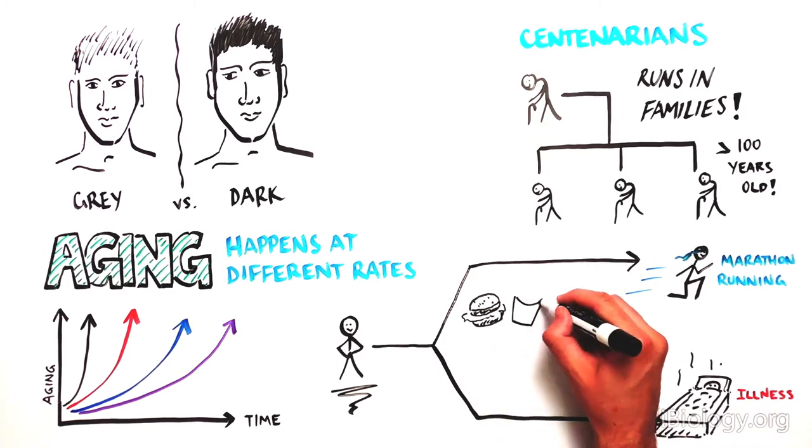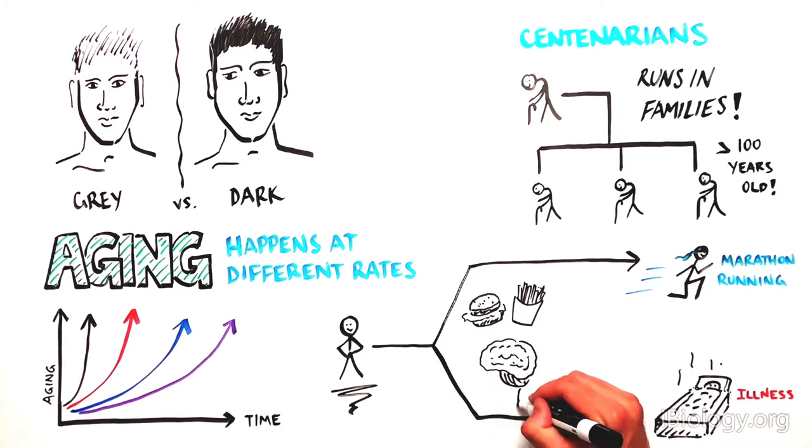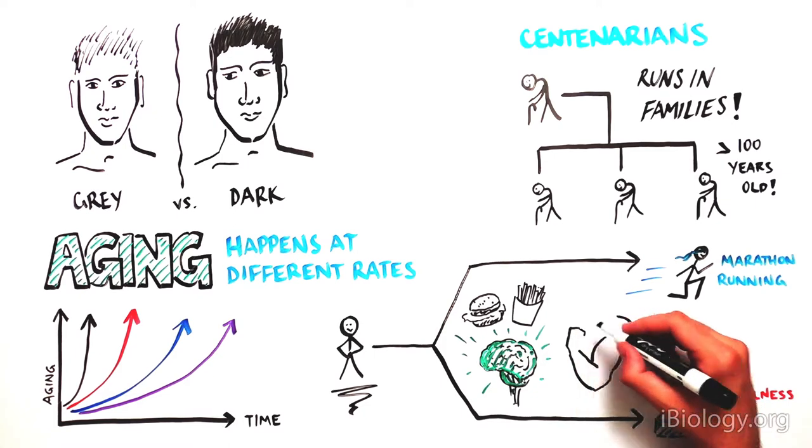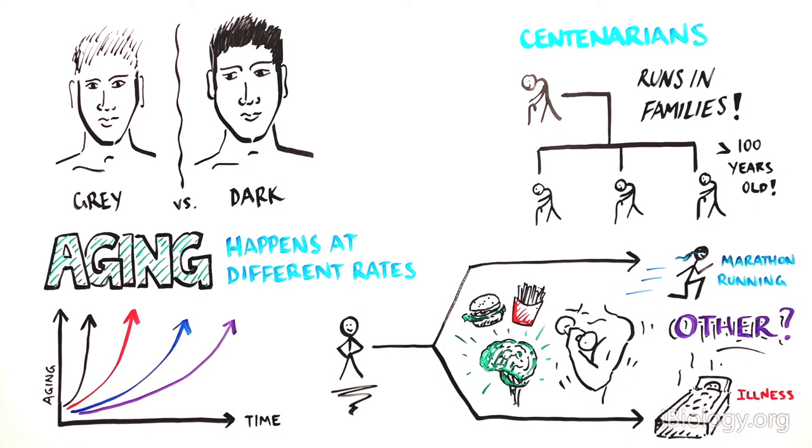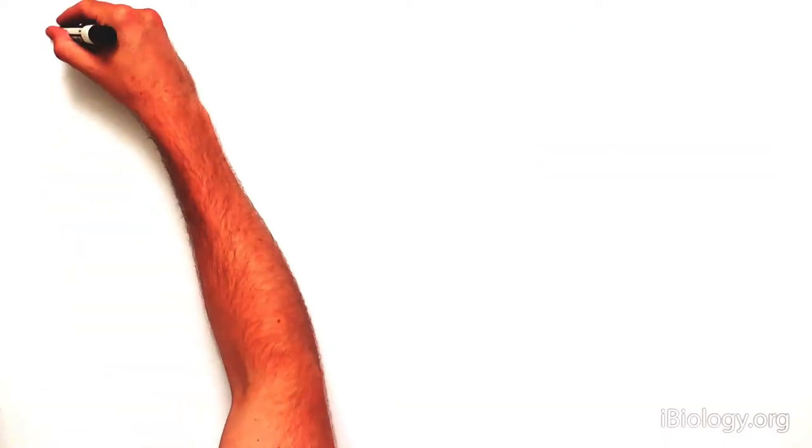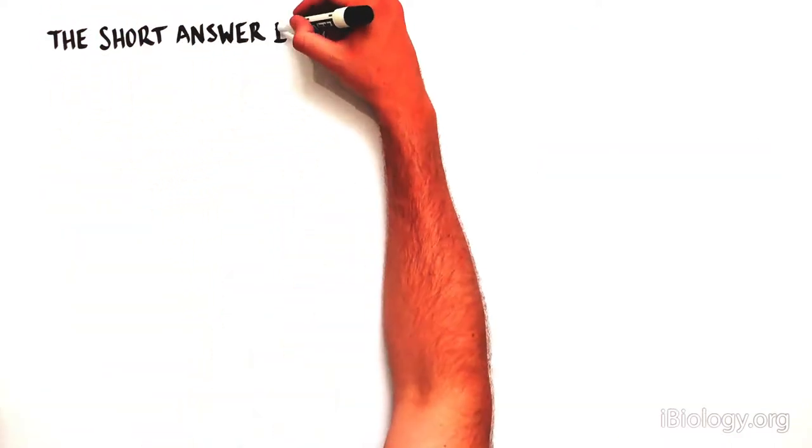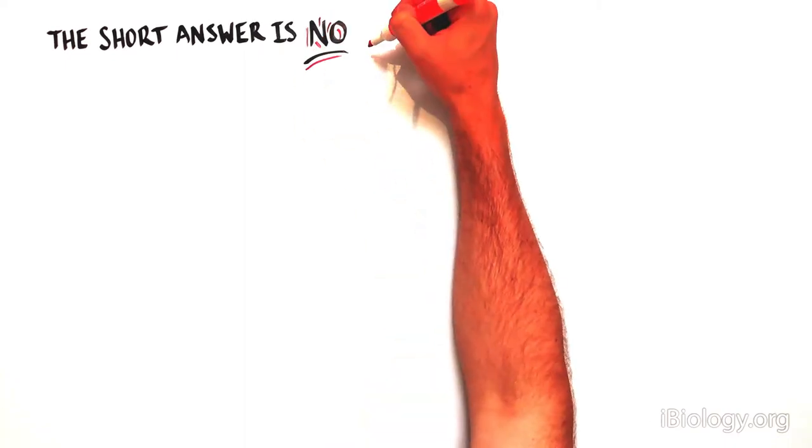Some of these genetic features are due to environmental influences, such as diet, stress, and exercise. But can the environment alone explain all of these differences in how quickly we age? The short answer is no. The environment alone cannot explain everything when it comes to aging.